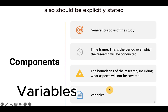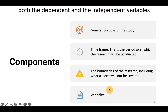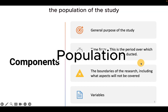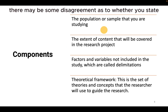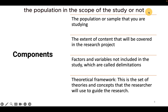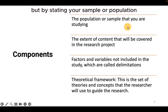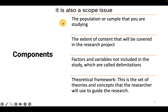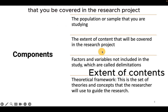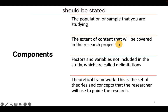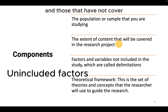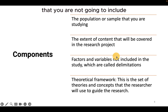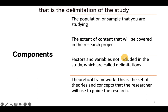The variables of your study should also be explicitly stated, both the dependent and the independent variables. The population of the study should be stated — there may be some disagreement as to whether you state the population in the scope of study or not, but stating your sample or population is also a scope issue. Also, the extent of the content that will be covered should be stated so that readers and other researchers know the aspects you have covered and those you have not. All the factors and variables you are not going to include should also be stated — that is the delimitation of the study.